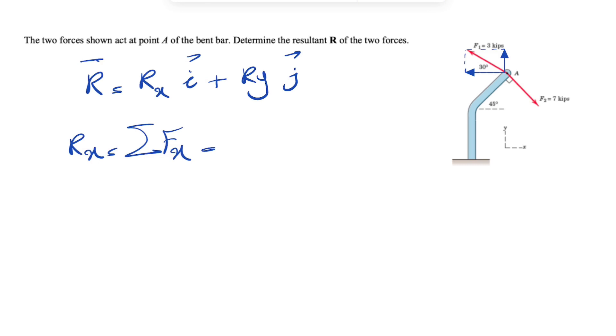So far, we have the X component of F1. We know this angle here is 30 degrees. Looking at the X component, we see that it's in the opposite direction of X. So we have a negative sign: F1, three kips, times cosine of 30, which gives us the X component.